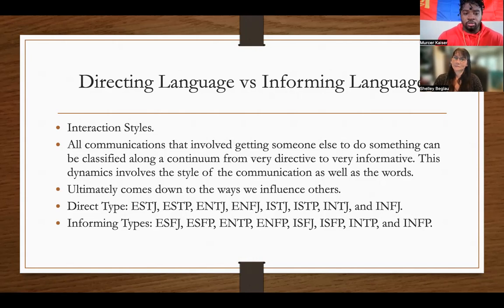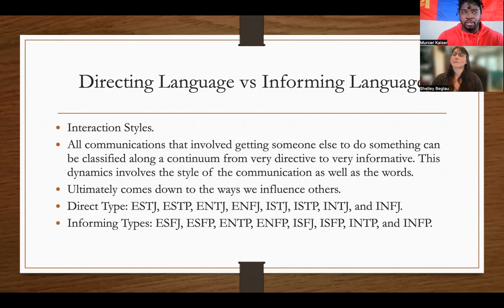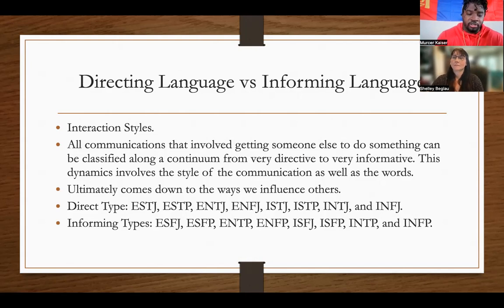Direct outcome or direct initiating are going to be your ESTJs, ESTP, ENTJ, and ENFJ. Then you have the direct responding progression, which is ISTJ, ISTP, INTJ, and INFJ.